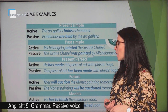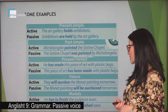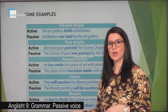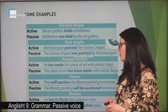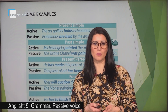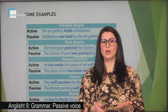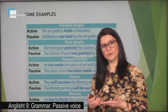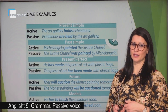And the last one — modals: he has to finish the sculpture soon. The modal here is 'has to'. How do we form the passive in modals? The sculpture has to be finished soon. So we form the passive in modals by using the modal, 'be', and the past participle of the verb. In this case: has to finish → has to be finished.